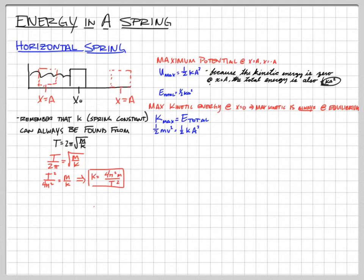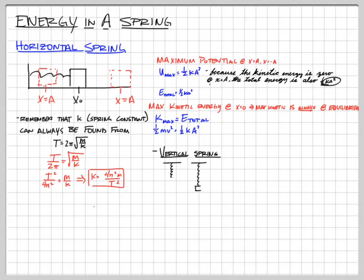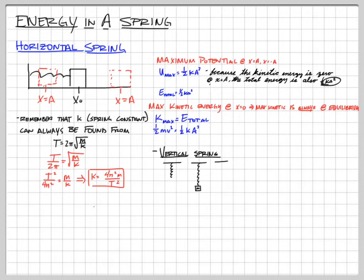That's how we can get the spring constant if we know the period. Energy in a vertical spring is a little more fun because we're adding gravity. There are three lengths we're concerned with: one is the unstretched length of the spring, one is the equilibrium position of the spring with the mass in it — if we let the mass gently settle, that's the equilibrium — and then we have the bottom position when we drop the mass and it stretches all the way down and pops back up.